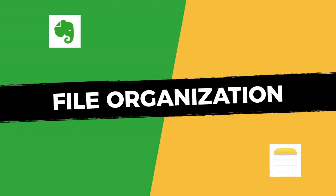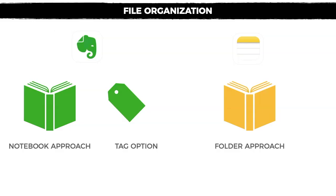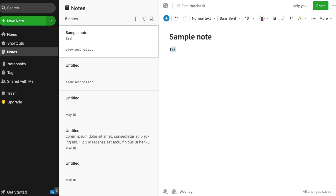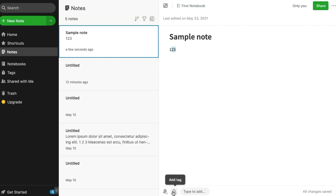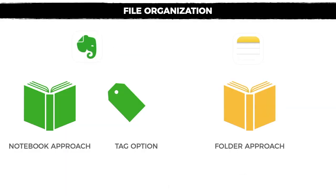When it comes to file organization, both apps use a folder structure, but Evernote offers way more versatility because it also has a tag option. You can create a notebook and then tag your notes for extra organization. Apple Notes has no tag option at all, which can be a deal breaker if you rely heavily on tags.